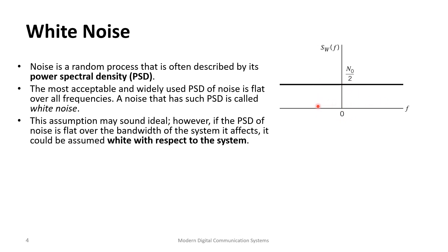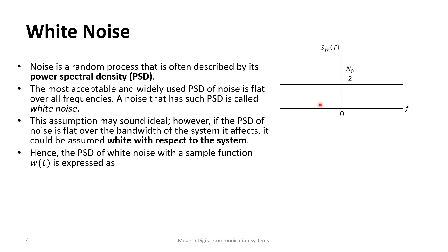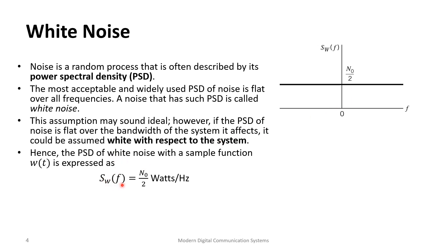However, the assumption of a flat PSD over a wide bandwidth is reasonable, as most of our systems cover a limited band — so for us it looks constant, and outside our system we don't care much. We express white noise as N₀/2, where the unit for N₀ is watts per hertz. Given a bandwidth, multiplying by N₀/2 gives the power. The factor of two accounts for both positive and negative frequencies.